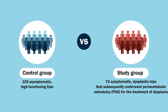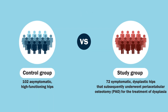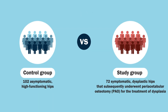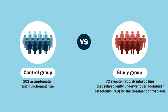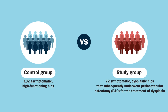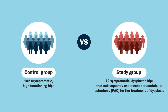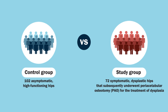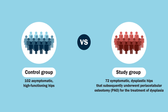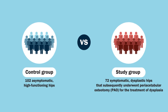The authors compared ASA values of patients in the control group, comprising 102 asymptomatic high-functioning hips, with ASA values of patients in the study group, comprising 72 symptomatic dysplastic hips.